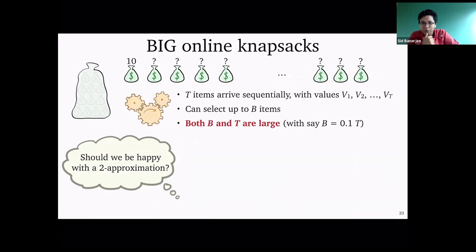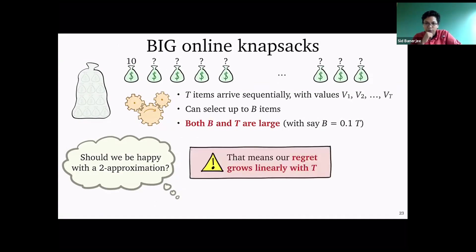What if the knapsack is much bigger and we have way more items? Formally, both B and T are large, and maybe B is like some constant fraction of T. We have a two-approximation for this case, but you shouldn't be happy with a two-approximation. If you have a very large number of items showing up and you can take 10% of all items, your overall value clearly increases with T. If you're giving up half the entire value, that means you have a regret growing linearly with T — a glass half empty.